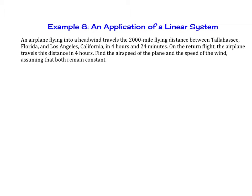An application of linear systems. An airplane flying into a headwind travels the 2,000 mile flying distance between Tallahassee, Florida and Los Angeles, California in 4 hours and 24 minutes. On the return flight, the airplane travels the same distance in 4 hours. We want to find the airspeed of the plane and the speed of the wind, assuming that both remain constant.